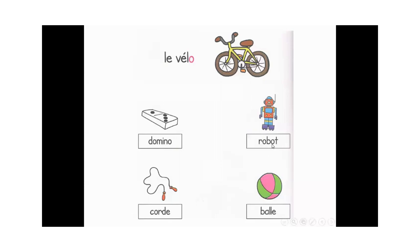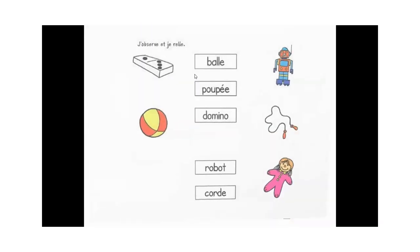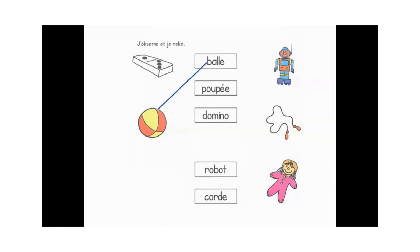Vocabulaire : le vélo. Domino. Robot — faites attention, on ne prononce pas le T à la fin : robot. Corde. Balle — s'il n'y a pas de O, il y a un A : balle. J'observe et je relis : balle, poupée — je prononce OU : poupée. Domino. Robot.